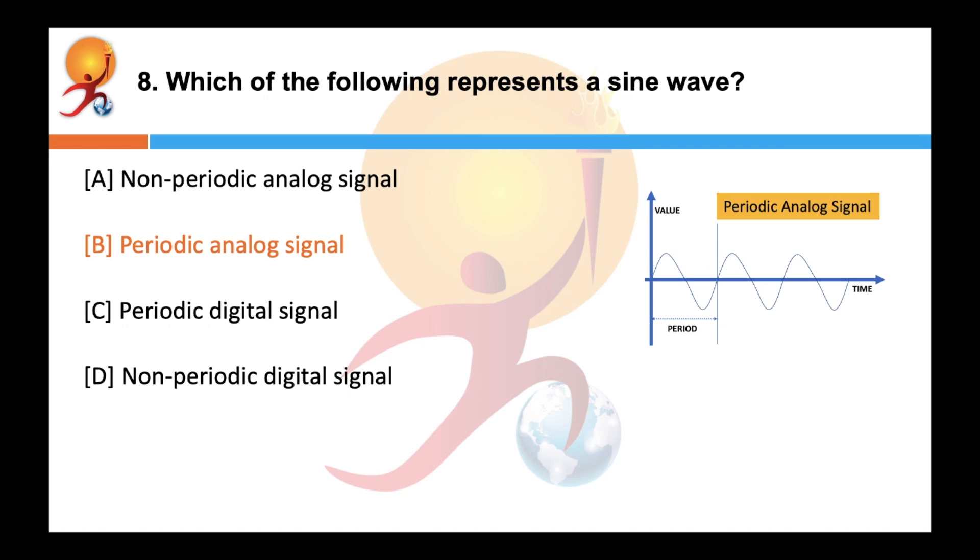A periodic signal completes a pattern within a measurable time frame called a period and repeats that pattern over subsequent identical periods.